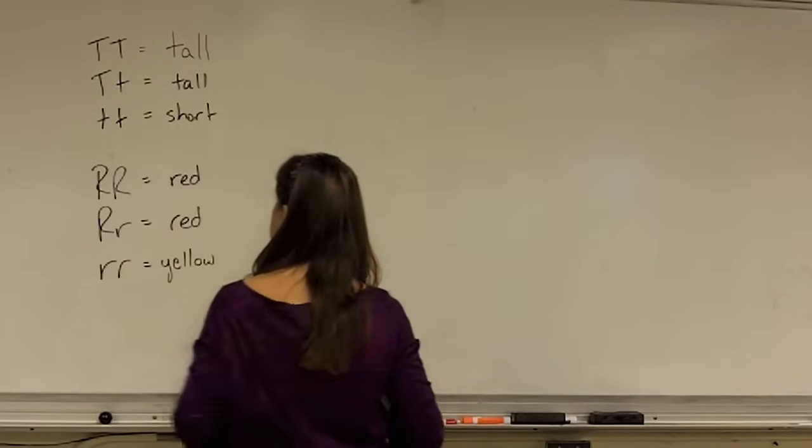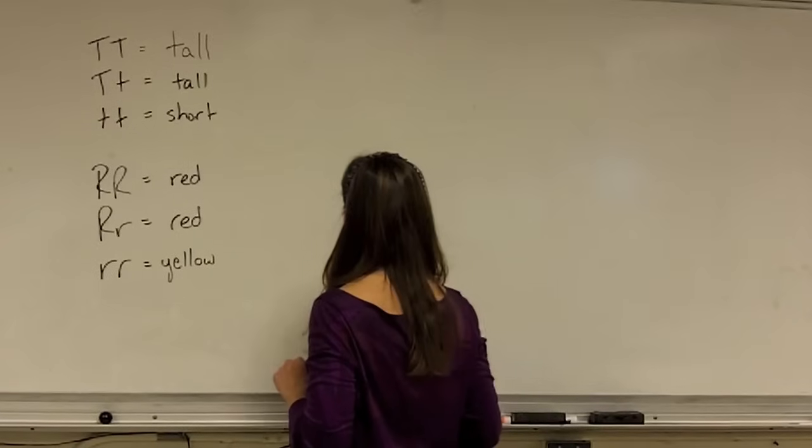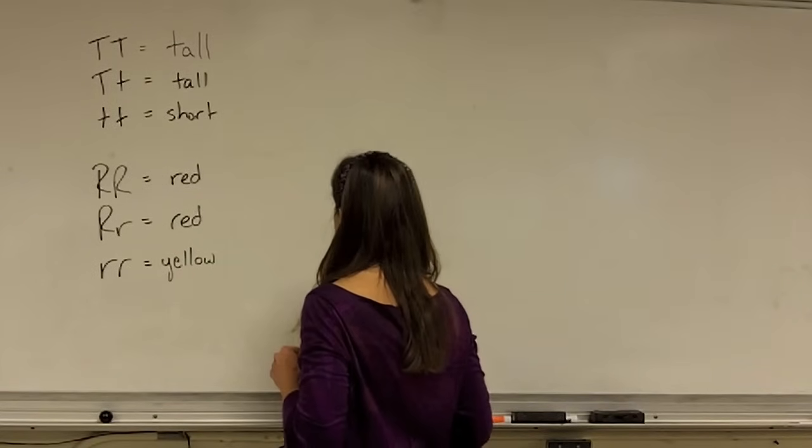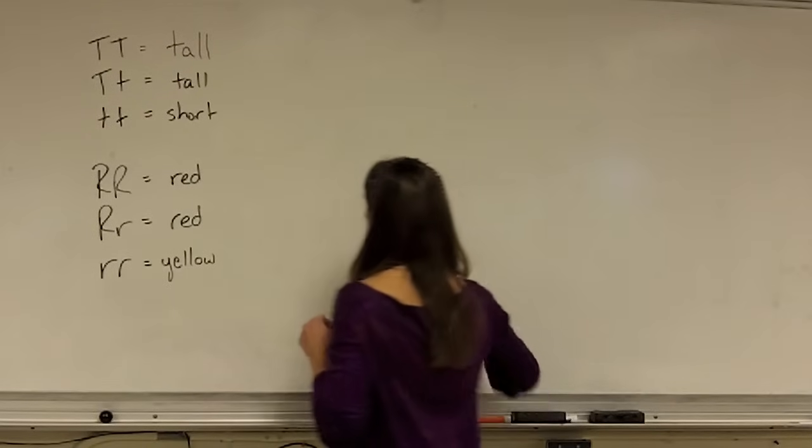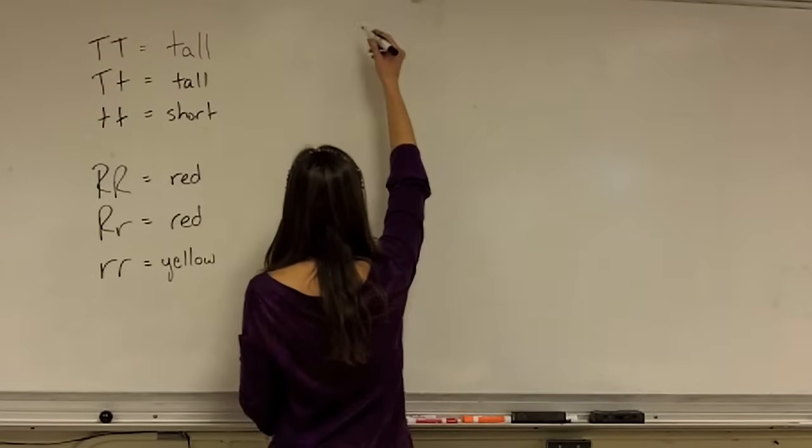To solve this problem, you want to start with a key, show your understanding of that pattern, and then we're going to go ahead and show the cross. In this case, we're going to do a cross with heterozygous parents, heterozygous for both traits.